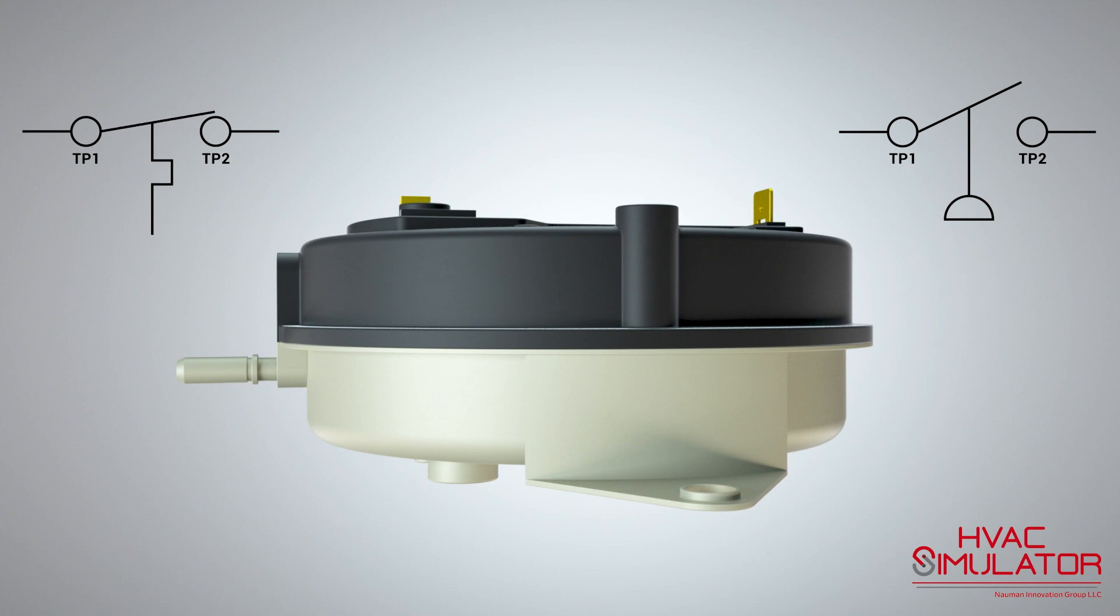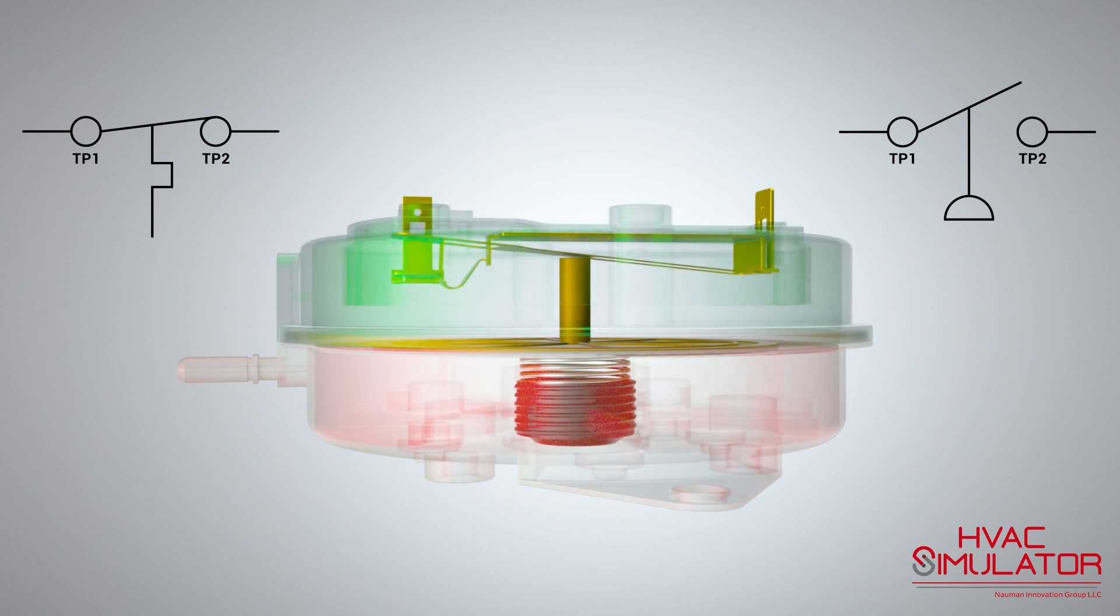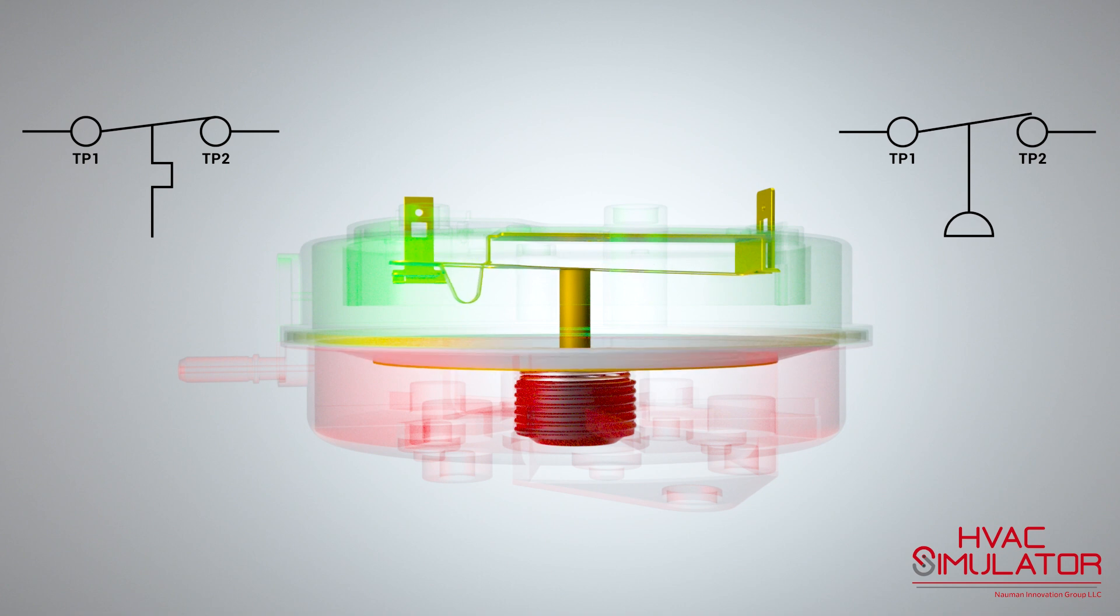On a call for heat, the inducer energizes, creating a negative pressure inside the cabinet and a much greater negative pressure on the backside of the switch. The diaphragm's inner disc moves towards the greater negative pressure, depressing the spring, and closing the contacts, allowing 24 volts to convey through the switch.